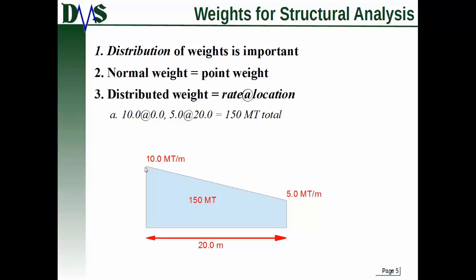A distributed weight though you tell it the rate by which weight changes per distance at different locations. And from that GHS calculates the total weight. So if you look at this trapezoid down here this is how GHS thinks of a distributed weight. What you're doing is telling it these numbers here at the corners. You're telling it that the weight is at 10 metric tons per meter right here and at 5 metric tons per meter down here.